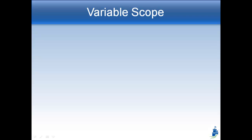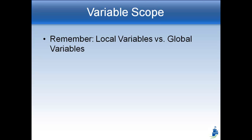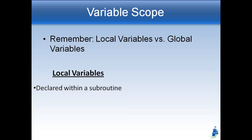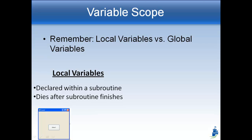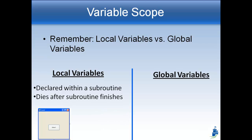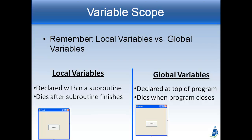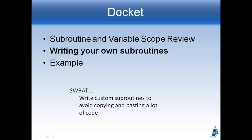We have subroutines for clicking on things and for when the form first loads. Now let's talk about variable scope. We have local variables and global variables. A local variable is declared within the subroutine using 'Dim myVariable As Integer,' but it dies when the subroutine ends. If you want to save it, you declare it as a global variable at the very top of the program. A global variable persists until the program closes, so it can be used between different subroutines.